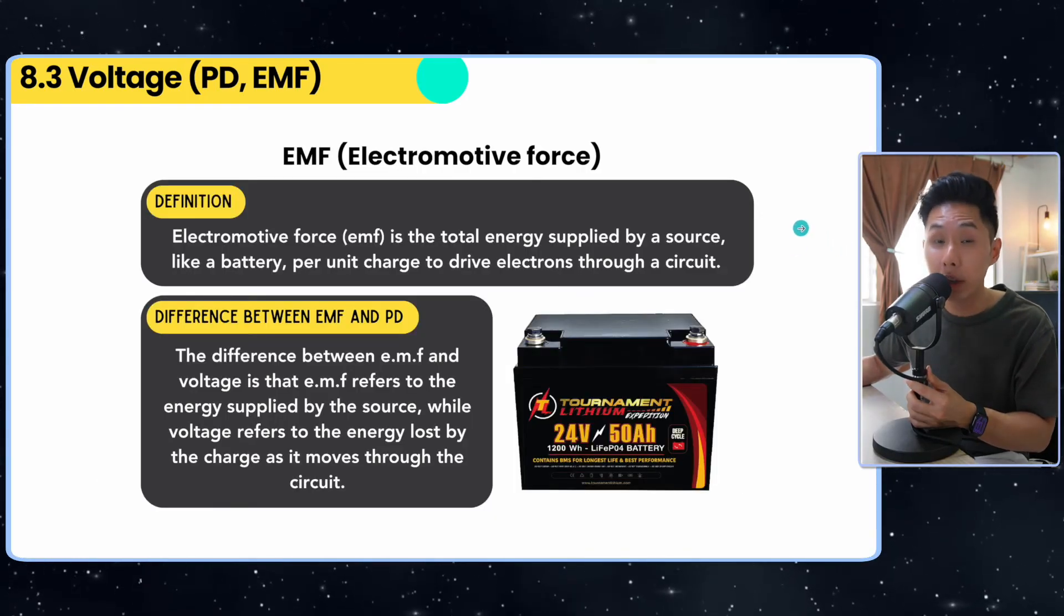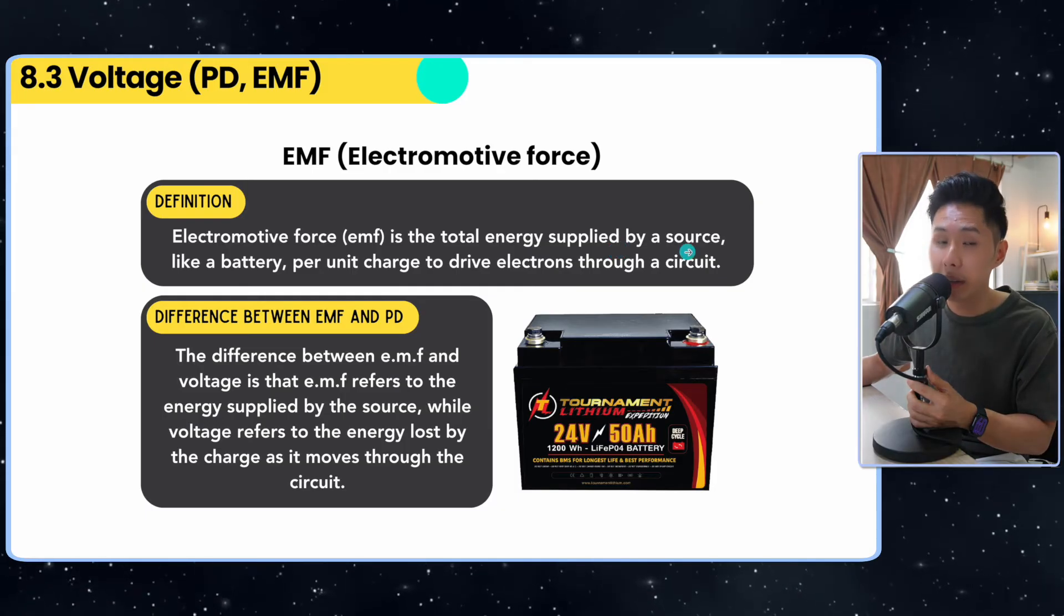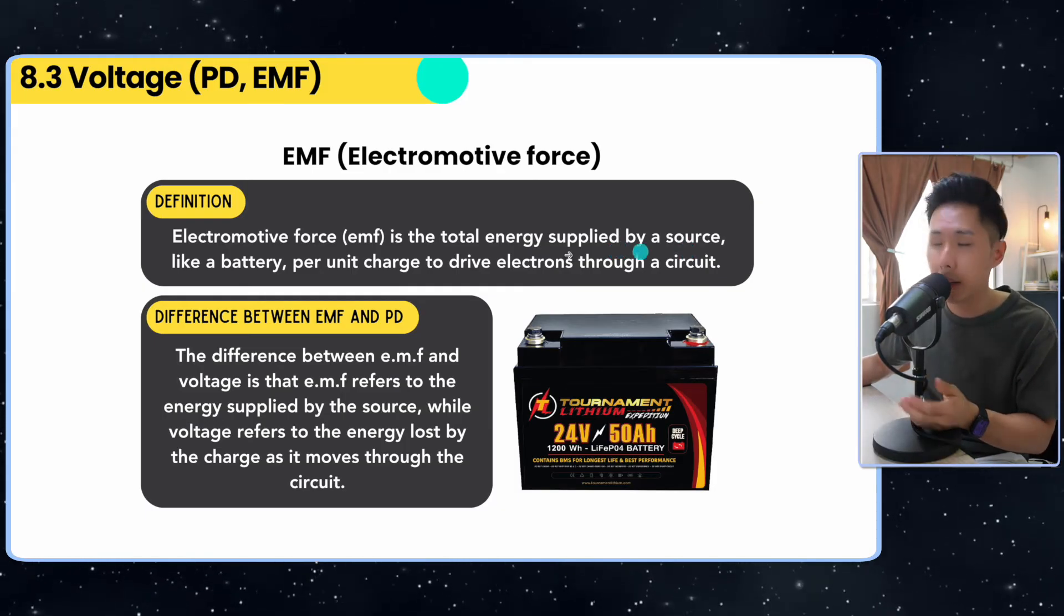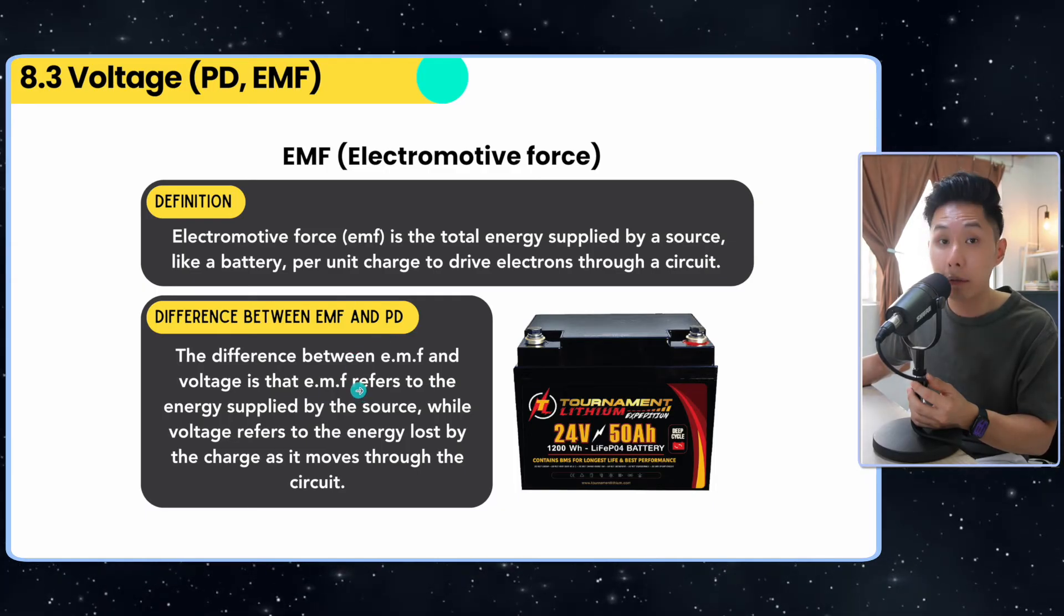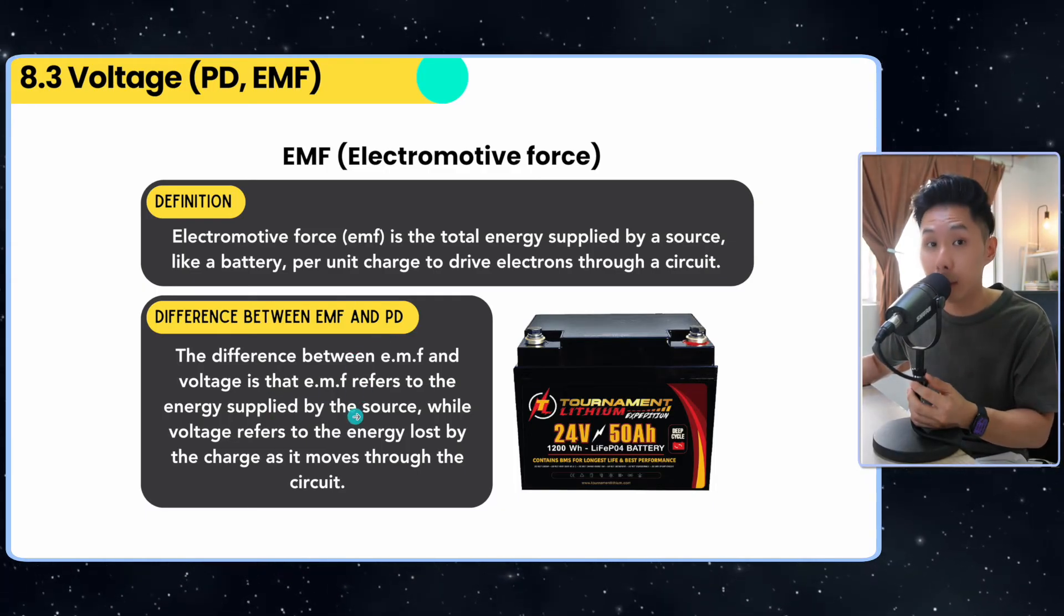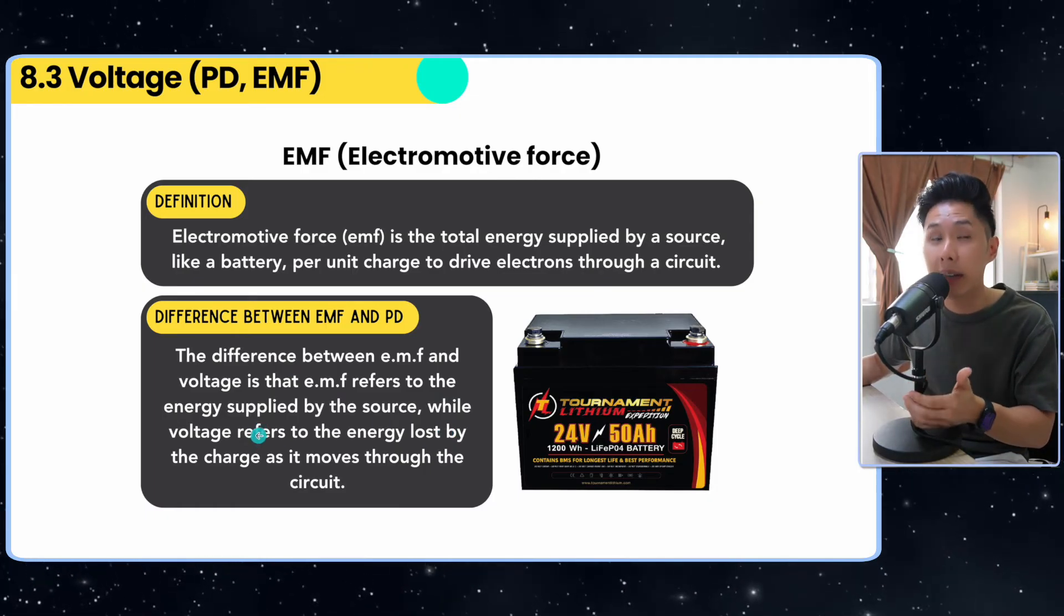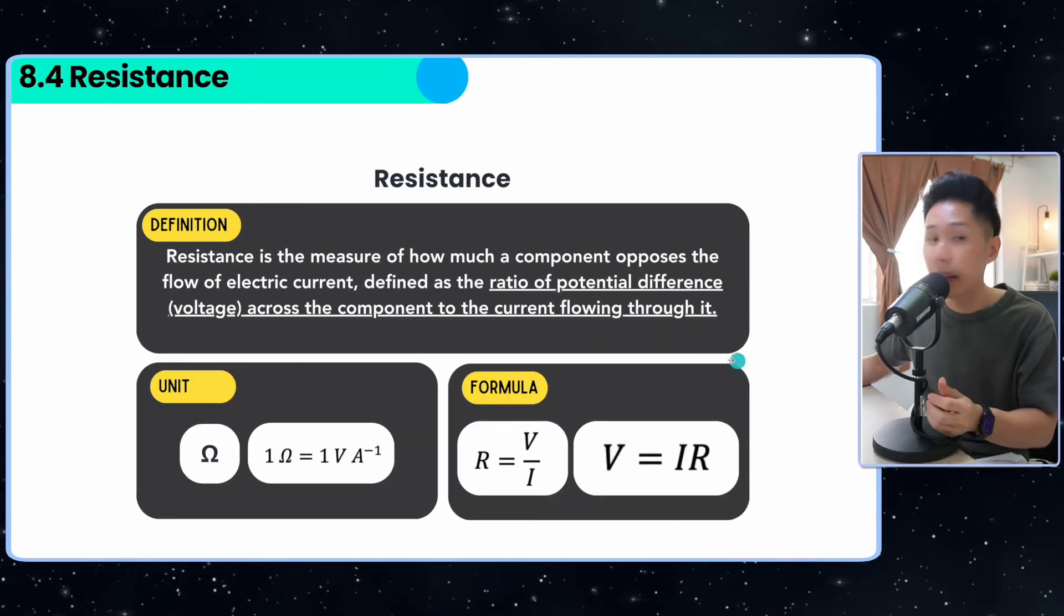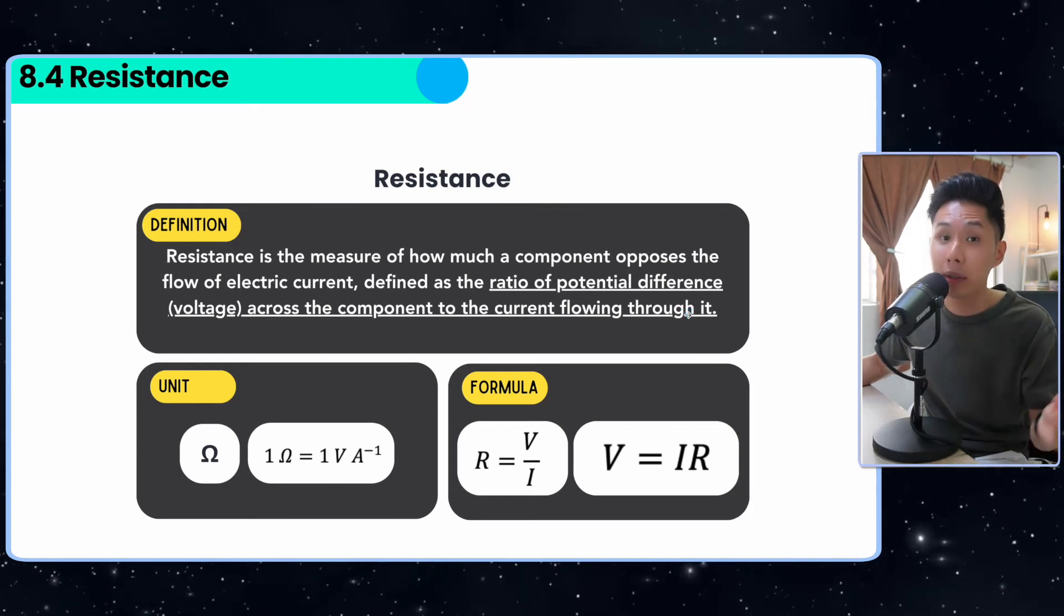Now something very similar to voltage is the concept of EMF, is the total energy supplied by the source. Sometimes it can be battery or power supply. And the only difference between EMF and PD is that EMF is usually referred to the energy supplied by a source, whereas voltage, it refers to more towards the energy loss in the circuit itself. Now that's voltage. We didn't go through a lot of that because we have more chapters on that in the future.